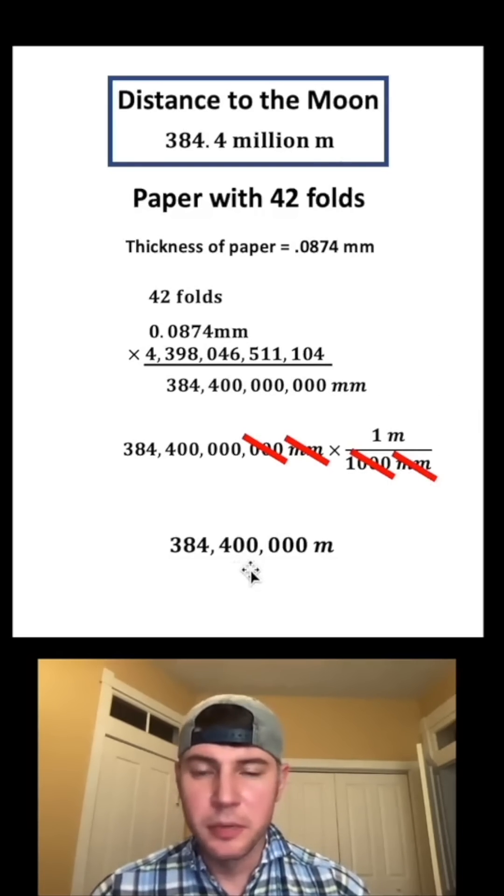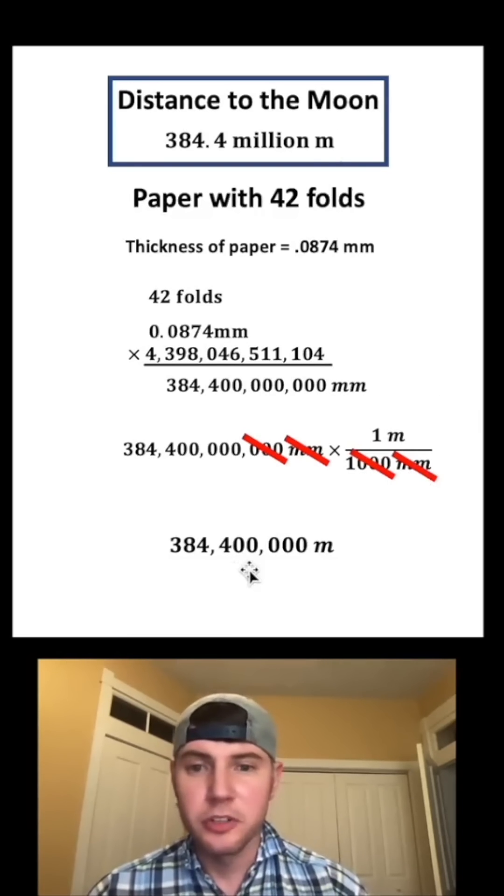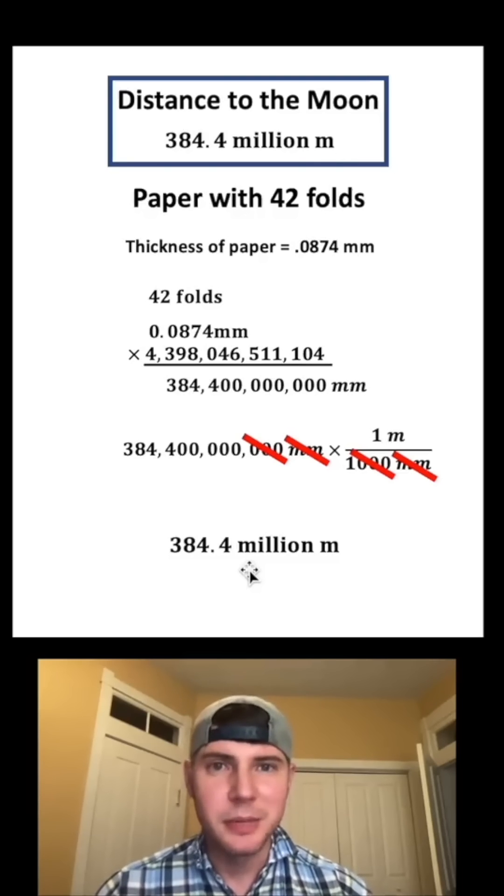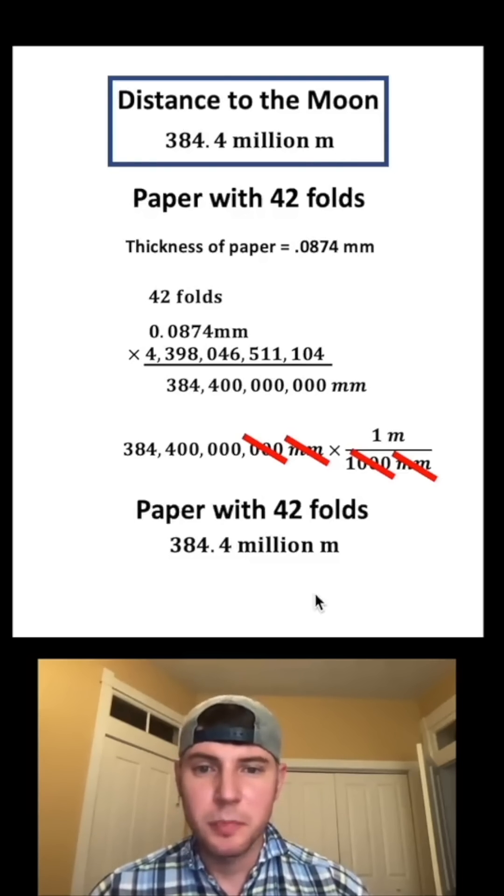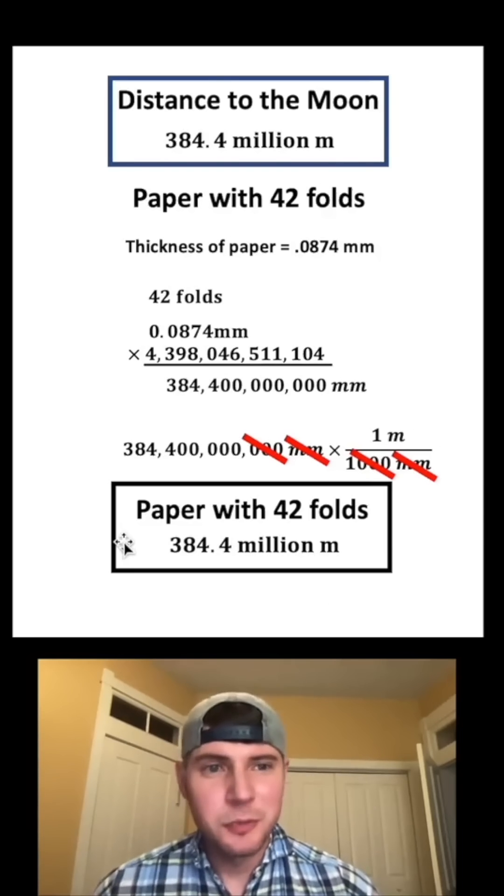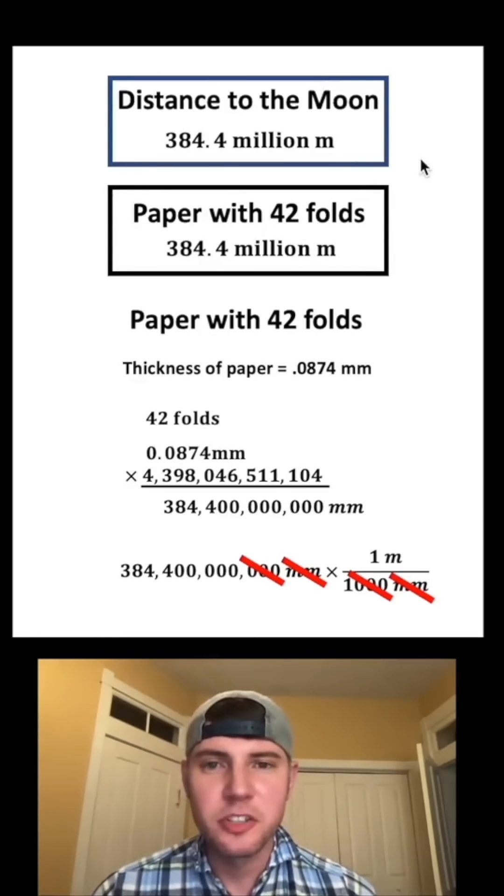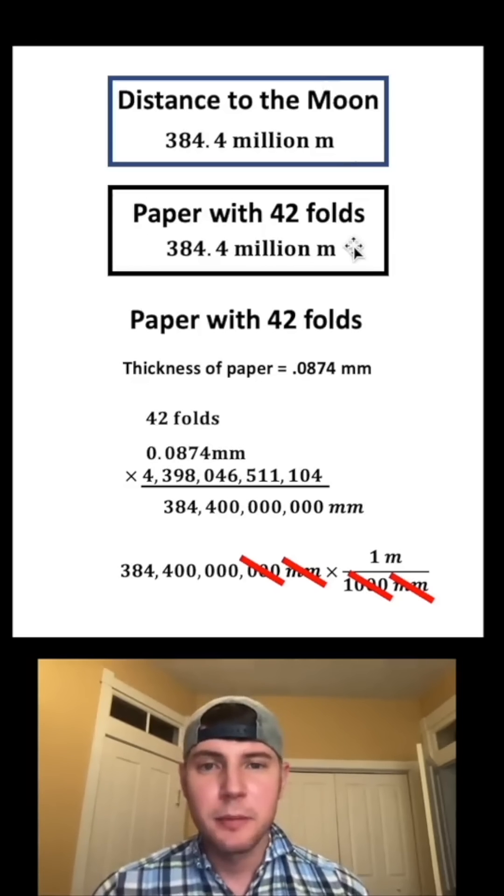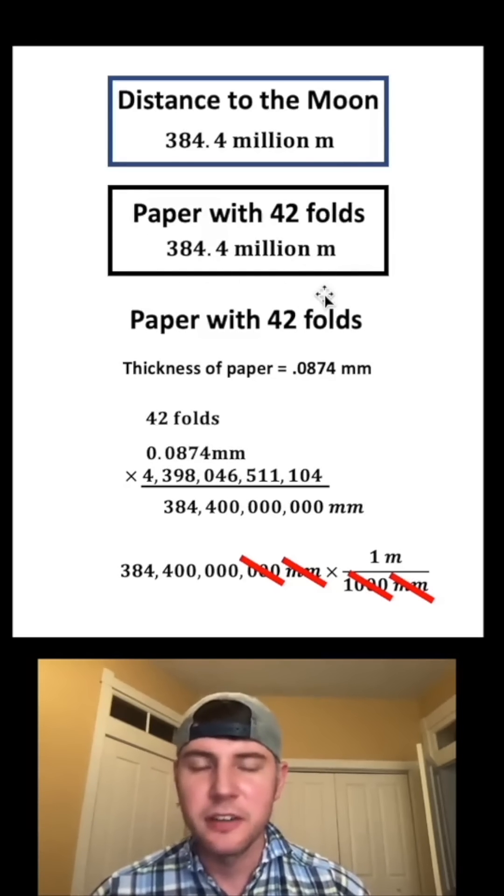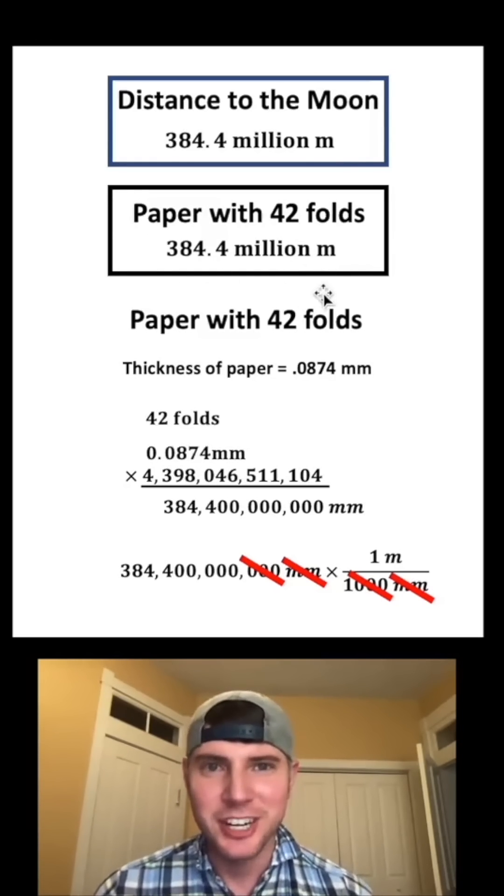This is 384,400,000 meters, or in other words, 384.4 million meters. Let's give it a label. This represents a paper with 42 folds, and let's put a box around it. Let's bring this box up here, and let's compare these. The distance to the moon is 384.4 million meters, and a piece of paper with 42 folds is 384.4 million meters. The math checks out. How exciting.